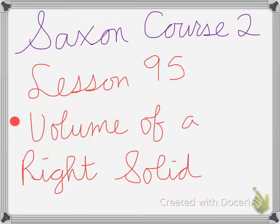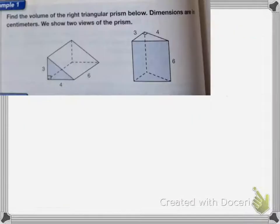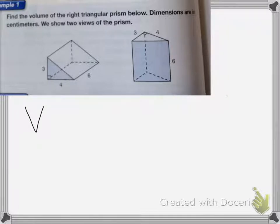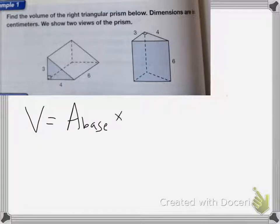Saxon Course 2, Lesson 95 is the volume of a right solid. So here we have a triangular prism, and it wants us to find the volume. The volume of a right prism is equal to the area of the base times the height of the object.